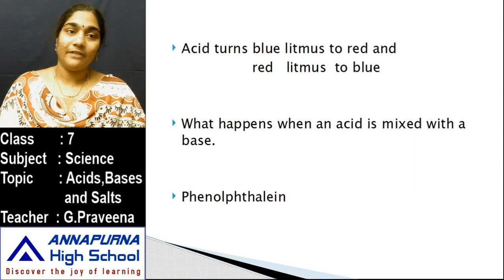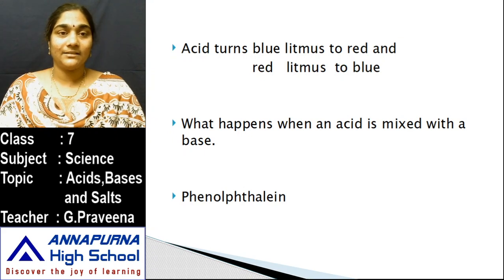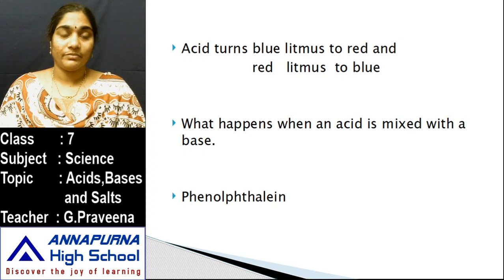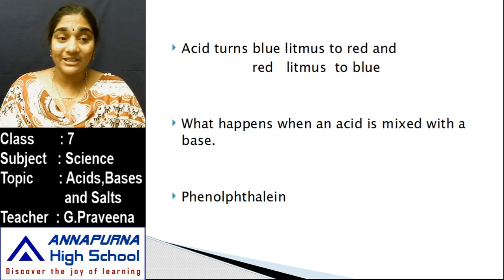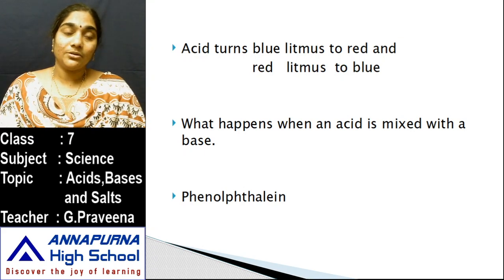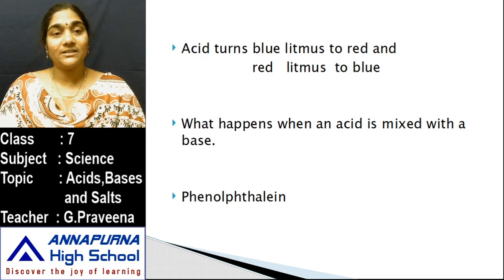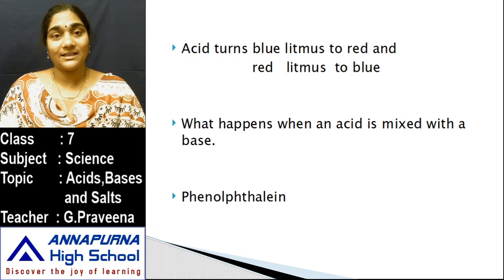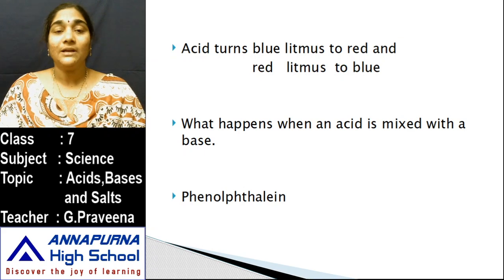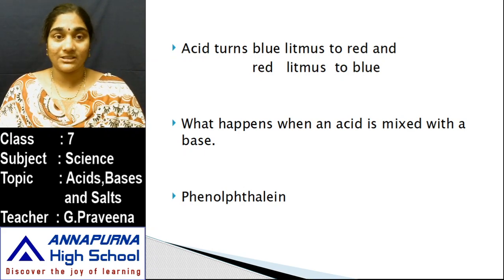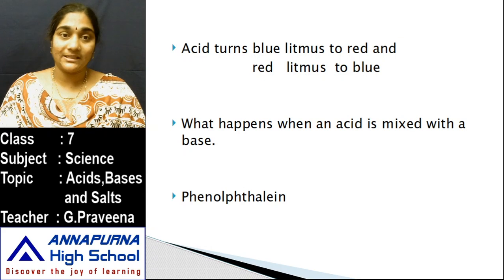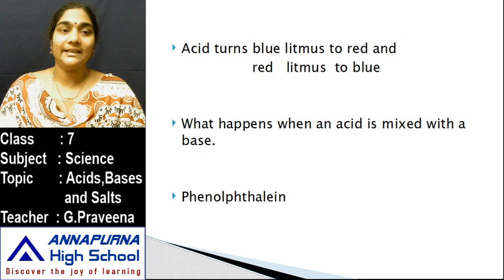In the last video, you learned that acid turns blue litmus to red and base turns red litmus to blue. The natural indicators we used to test whether a substance is acid or base are turmeric powder, litmus paper, and china rose petals. These are all natural indicators.